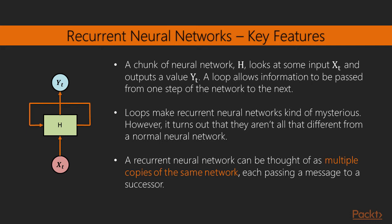So let's say that H is a chunk of neural network which looks at some input Xt and outputs a value Yt. Xt and Yt here could be both real values or vectors. The loop allows information to be passed from one time step to the next, where the Xt has changed and we want to produce a new Yt based also on the previous X values.